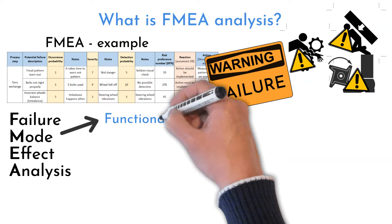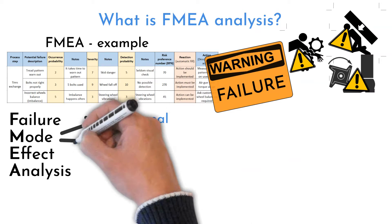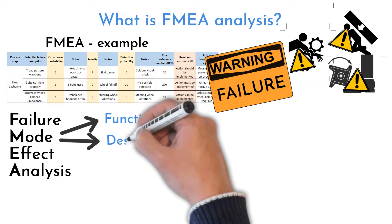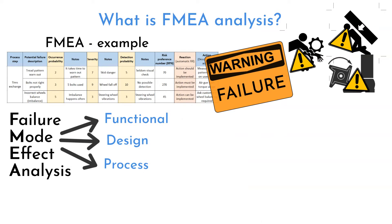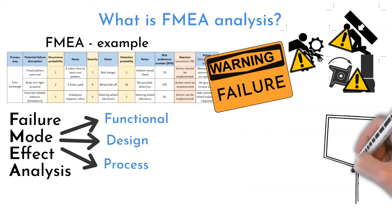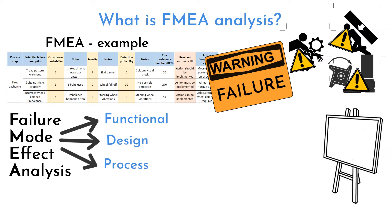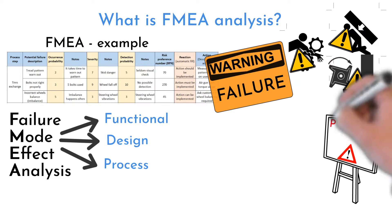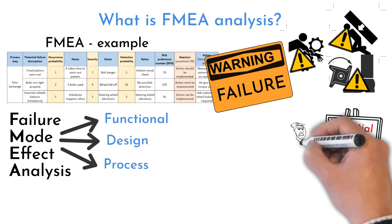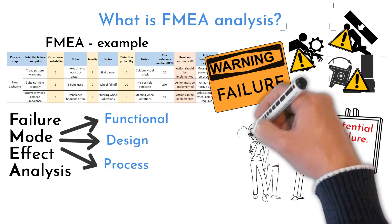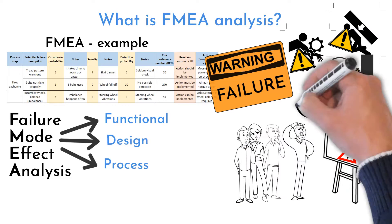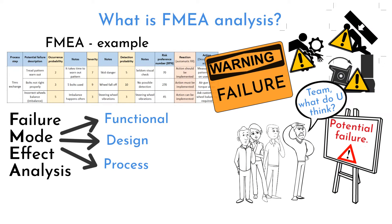There are different FMEA types: Functional, Design, and Process FMEA. We use team experiences with similar products, processes, or common-sense logic to estimate failure probability.